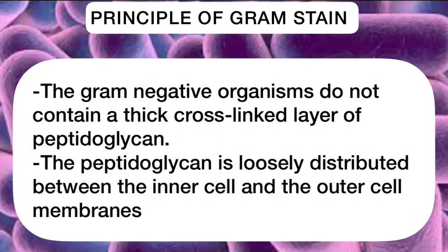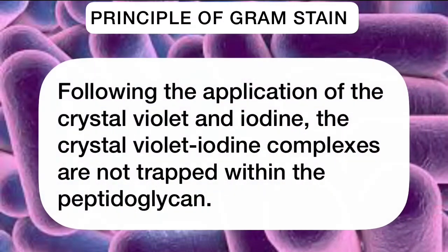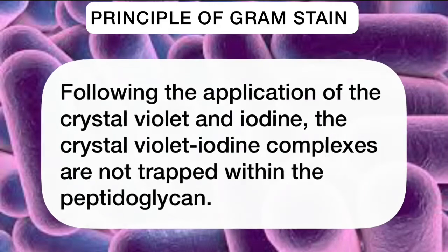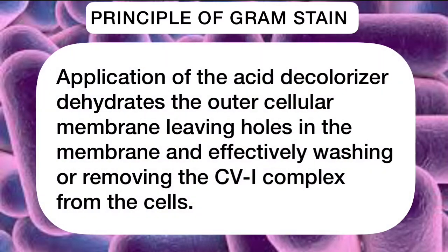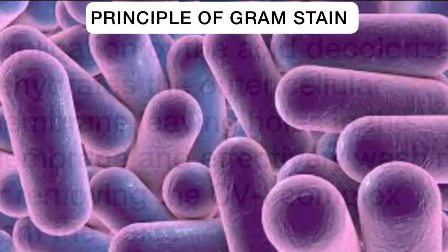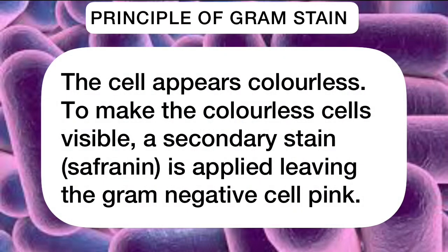Gram negative organisms do not contain a thick cross-linked layer of peptidoglycan. The peptidoglycan is loosely distributed between the inner cell and the outer cell membranes. Following the application of crystal violet and iodine, the crystal violet-iodine complexes are not trapped within the peptidoglycan. Application of the acid decolorizer dehydrates the outer cellular membrane, leaving holes in the membrane and effectively washing or removing the crystal violet-iodine complex from the cells, making the cell appear colorless. A secondary stain is then applied to make the colorless cells visible.